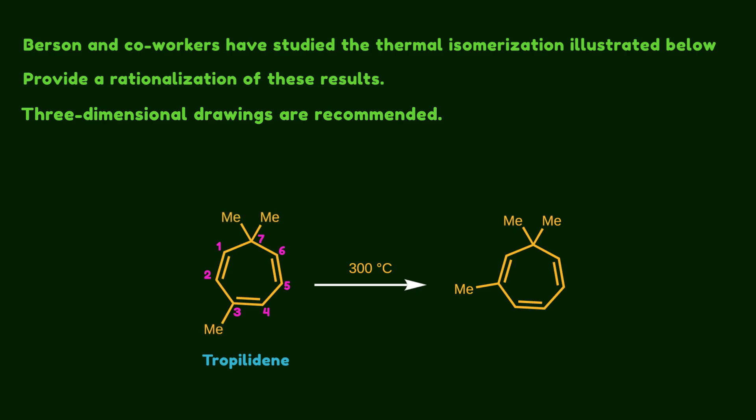Surprisingly, they observed that a peculiar rearrangement occurred during the reaction. As you can see, the methyl group on the 3rd position migrates to its neighboring carbon atom at the 2nd position. The question asks you to provide a reasonable mechanism for its rearrangement.